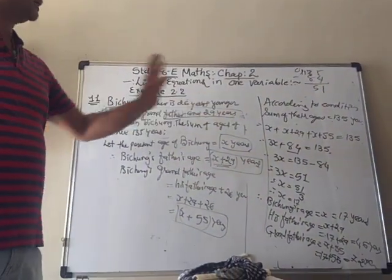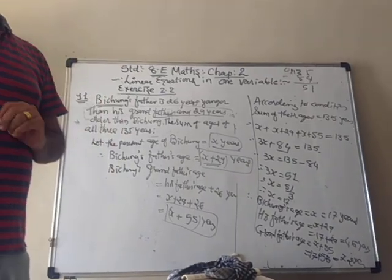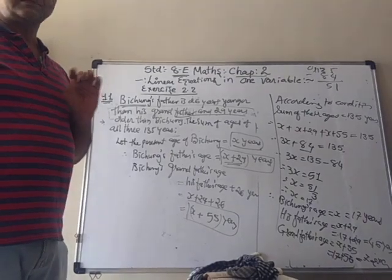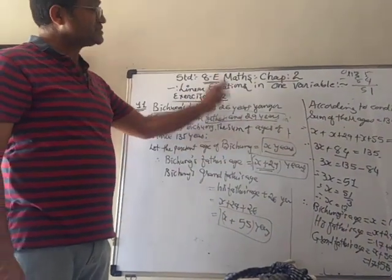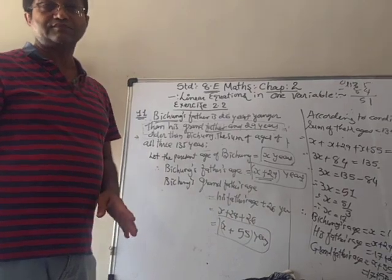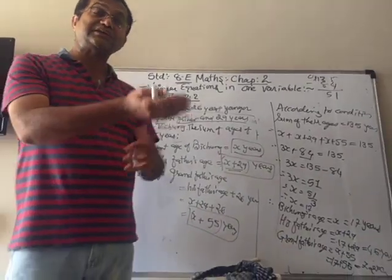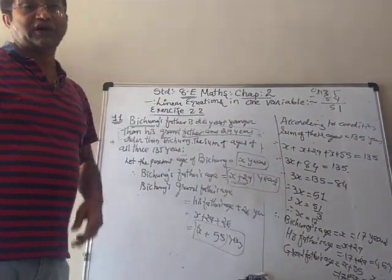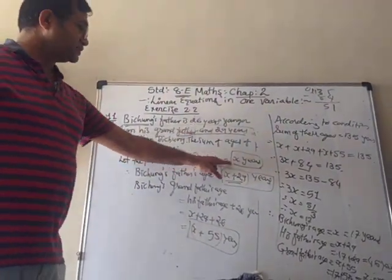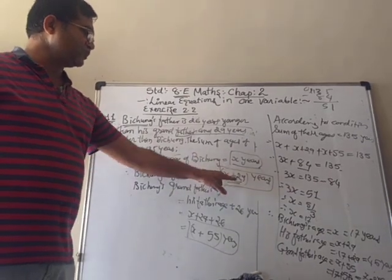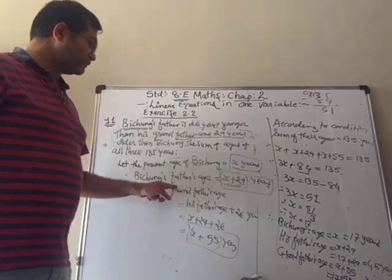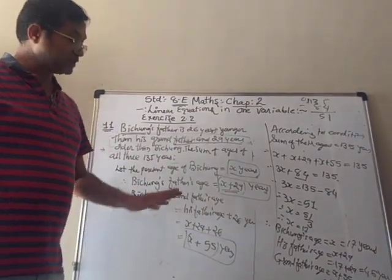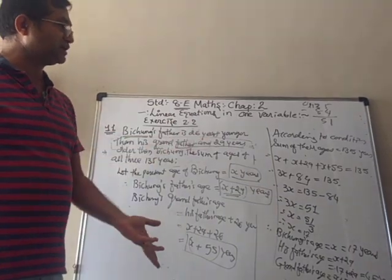You can verify: add 17 plus 46 plus 72 and you get 135. The key step that is a bit confusing is the first sentence — father is 26 years younger than grandfather — so we reverse it: grandfather is 26 years older than father, giving x plus 29 plus 26, which is x plus 55.